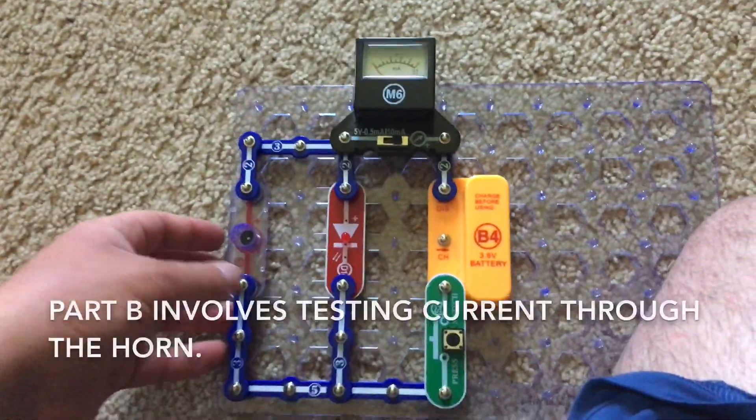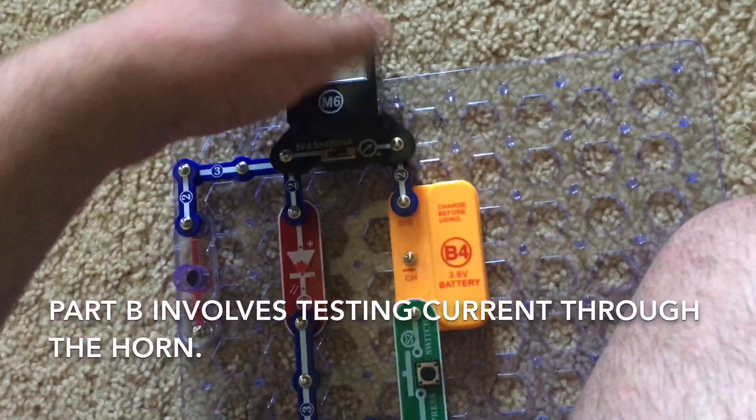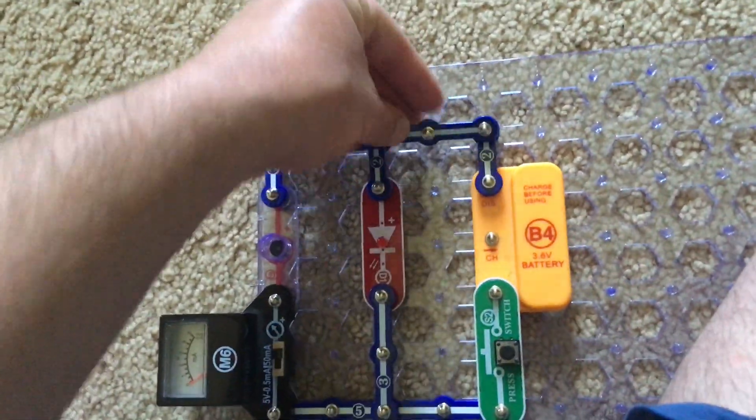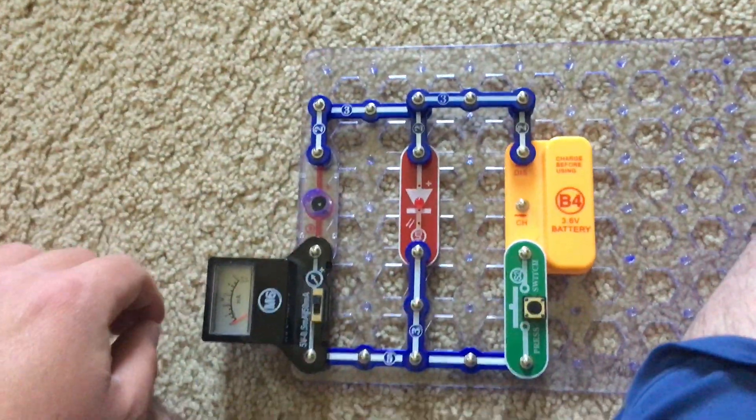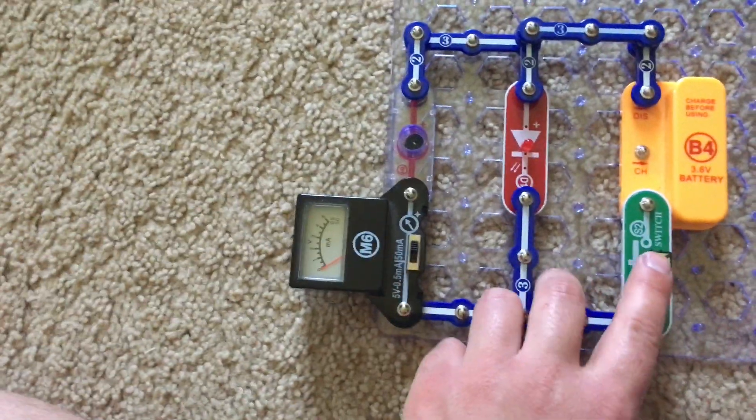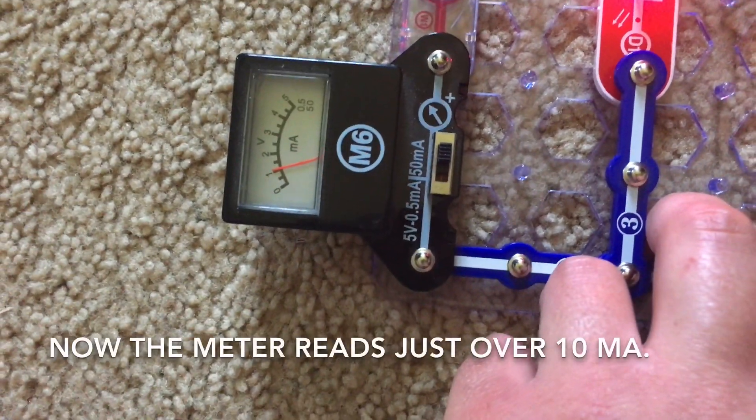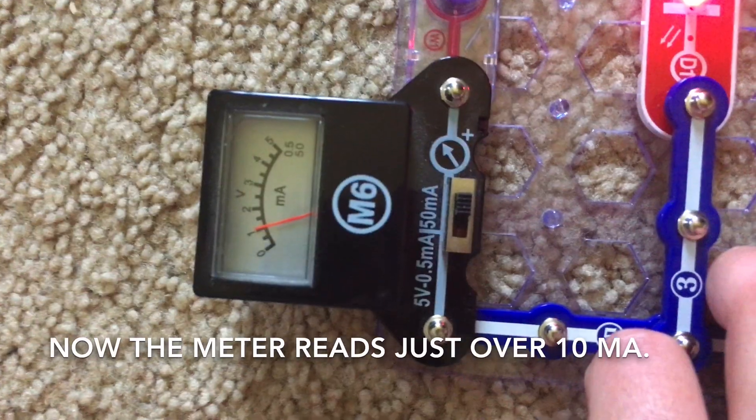Now for part B, we will swap the locations of the meter and three snap wire and now the meter will measure the current flowing through the horn. Here we go. Now the meter reads just over 10 milliamps.